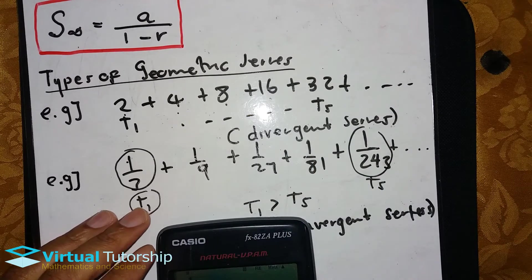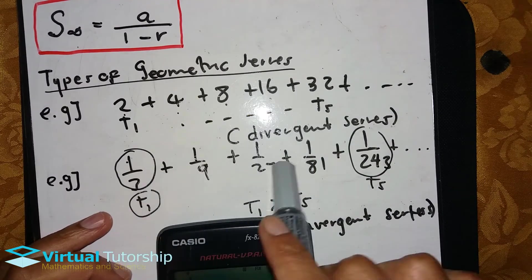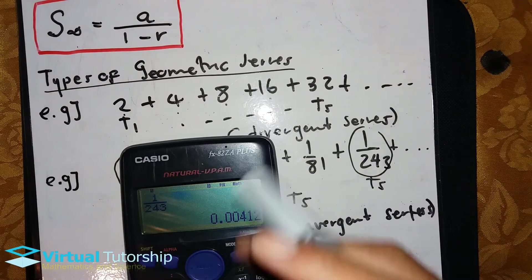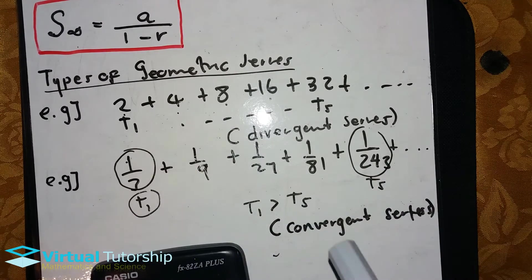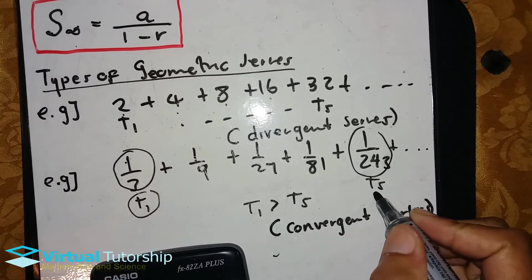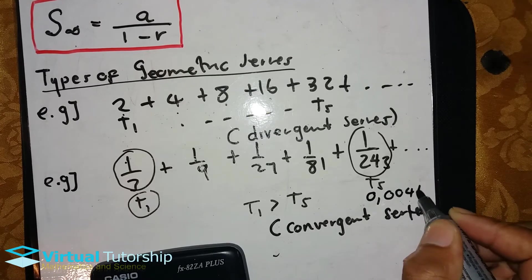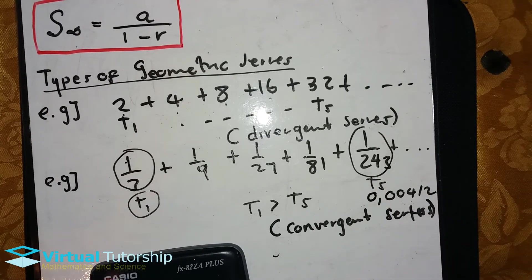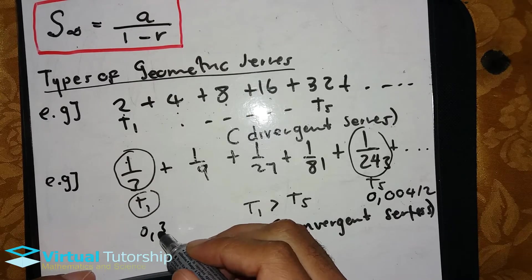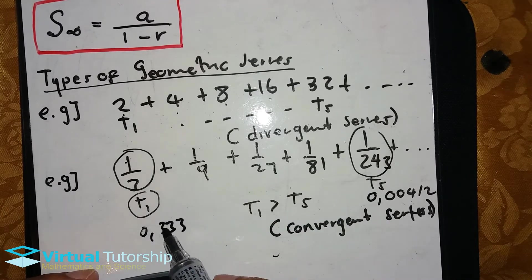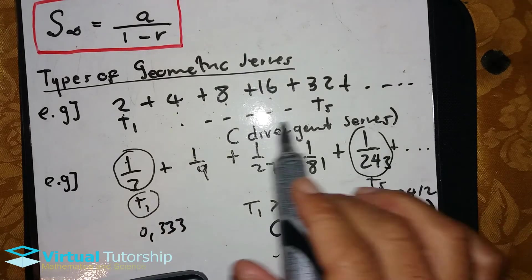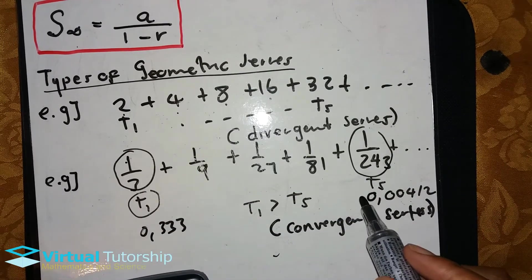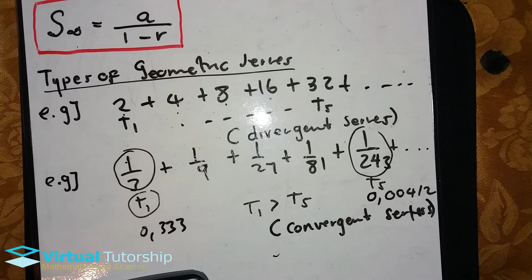From T1 all the way up to T5 in decimal places — 1 over 3 is 0.3333. So from T1 to T5, the terms approach zero. So now I have a convergent series, which is easier to calculate the sum to infinity.